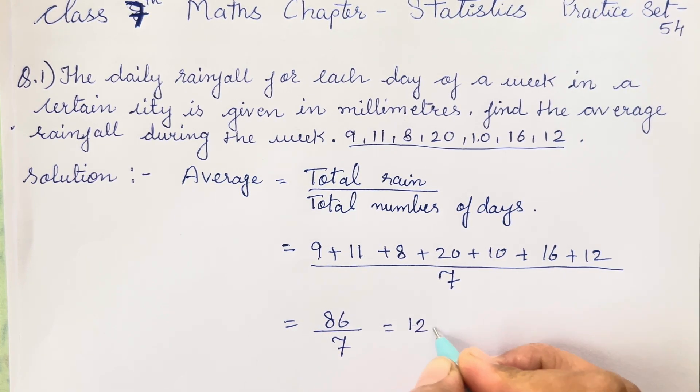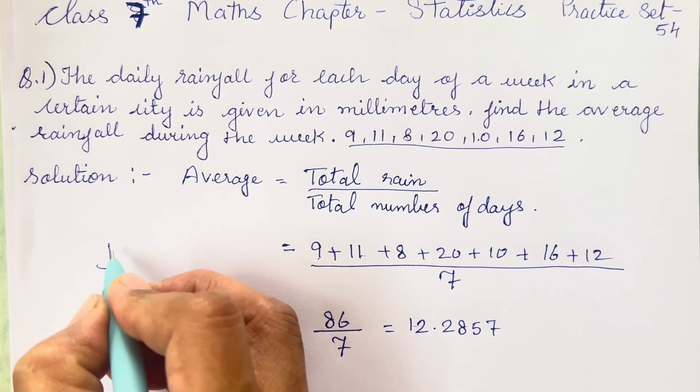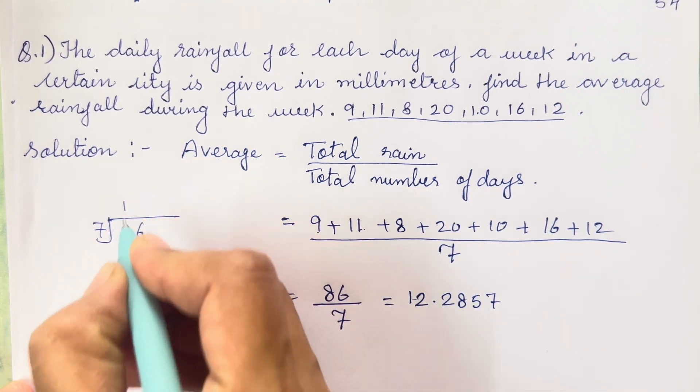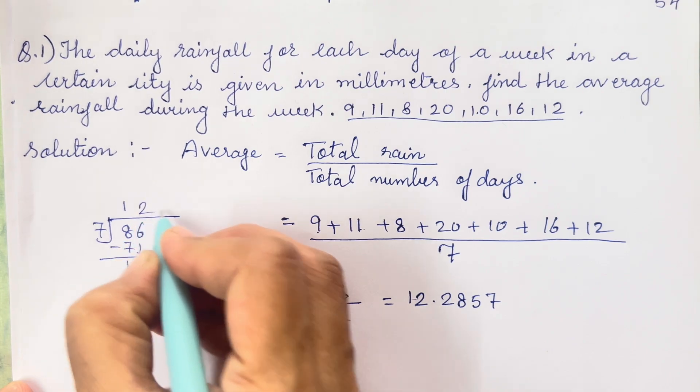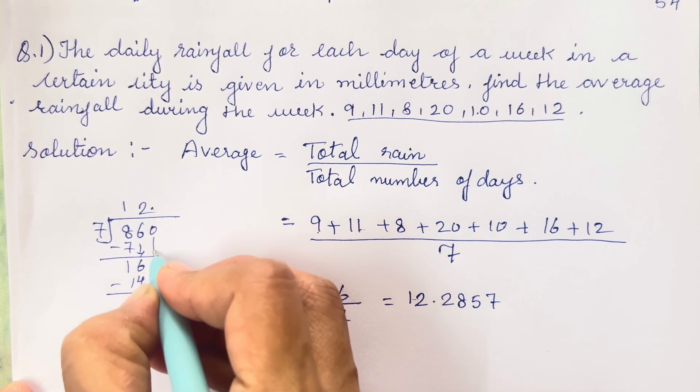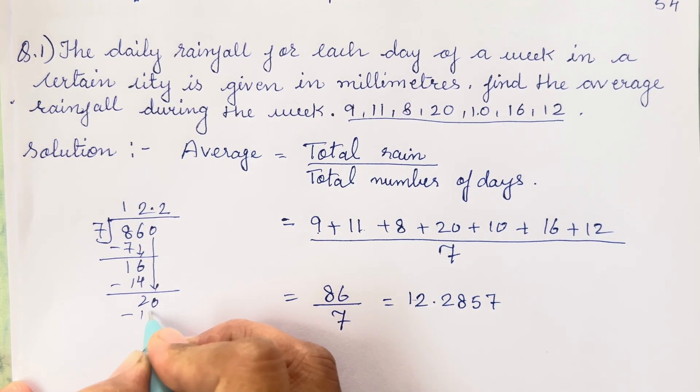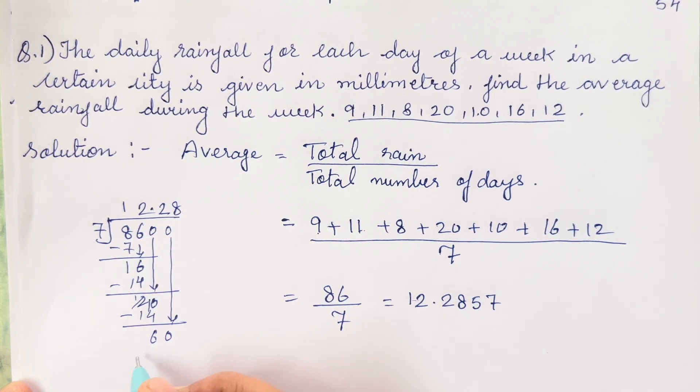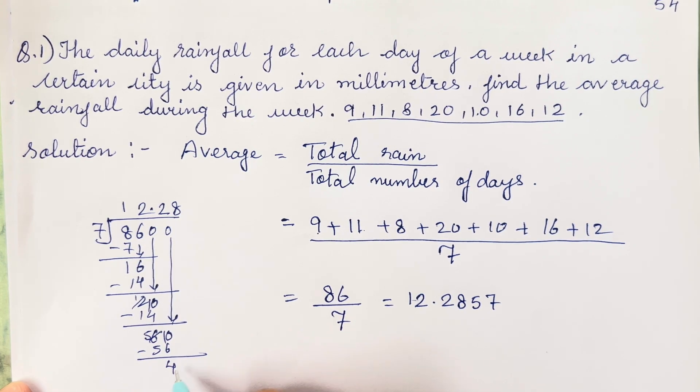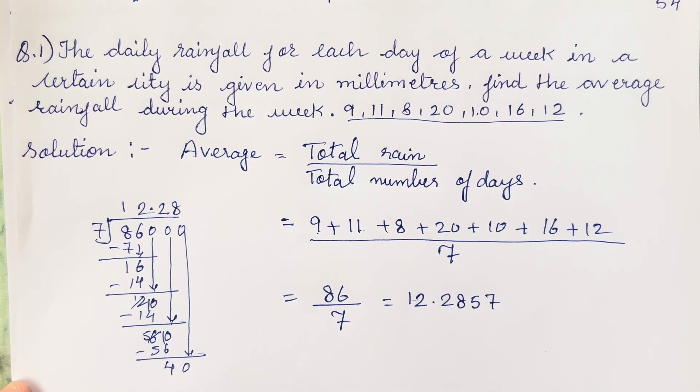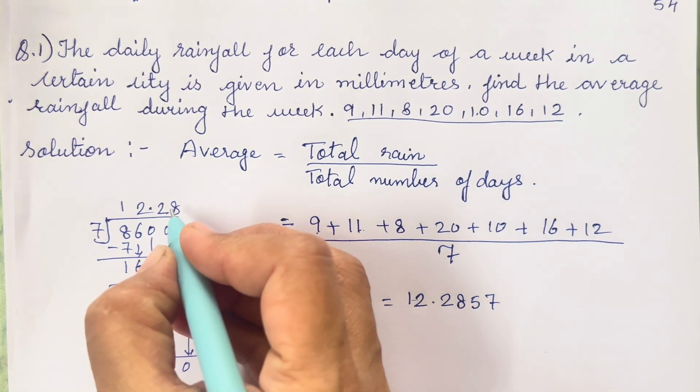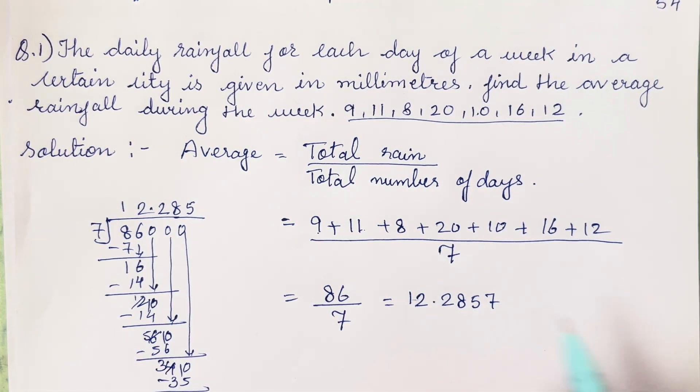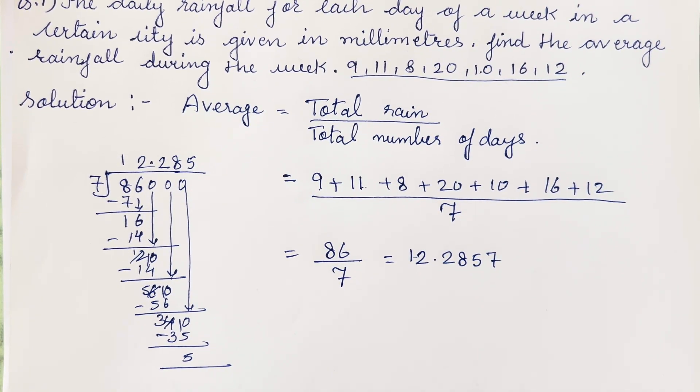When you divide it your answer is going to be 12.2857. Now division in this way I am going to show you all because many of you find it difficult for division. So see this was the answer that is supposed to come. You all have to write 7, 8 are 56. So this will be 5, 4 again if you take a 0 for 3 decimal point or 2 decimal point you can do it.